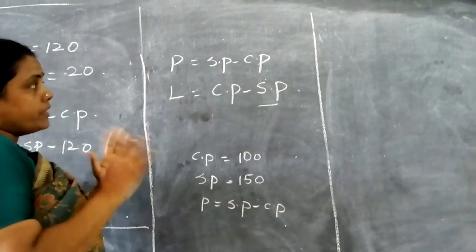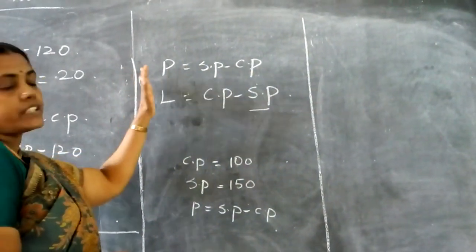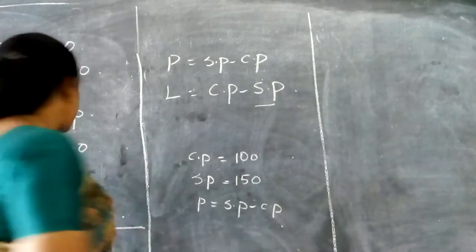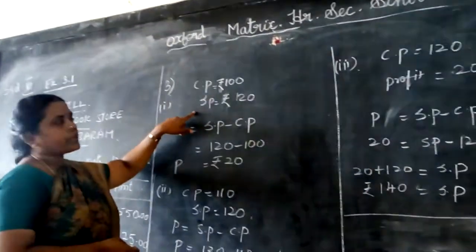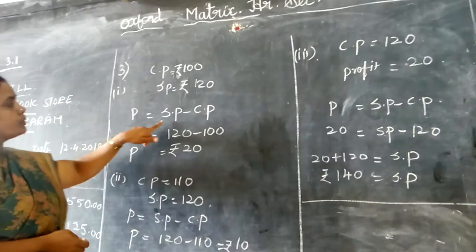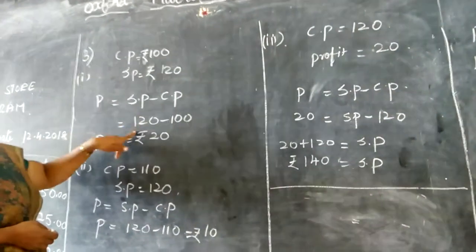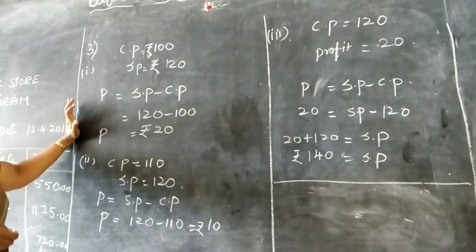So we will decide only by seeing the SP and CP. Now we are going to do the sums based on this. Cost price is equal to 100, selling price is equal to 120. When SP is more automatically it is profit. So profit is equal to SP minus CP, 120 minus 100, which is 20.